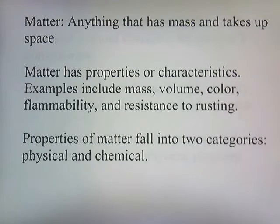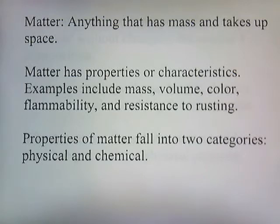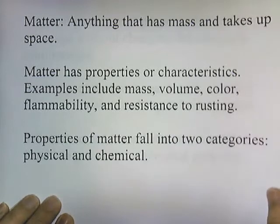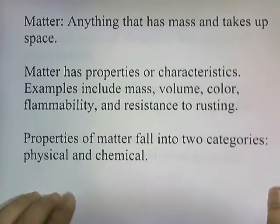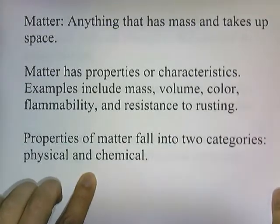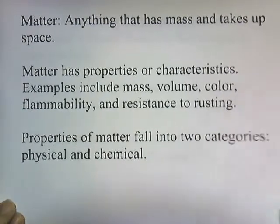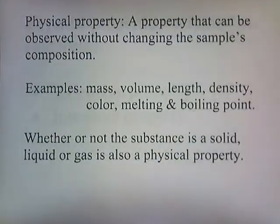Matter is anything that has mass and takes up space. Matter has properties or characteristics, and some examples include mass — how heavy something is — volume, how much space it takes up, the color of the matter, flammability, and resistance to rusting. Properties of matter tend to fall into two categories, physical and chemical, and some of these are both physical and chemical properties.